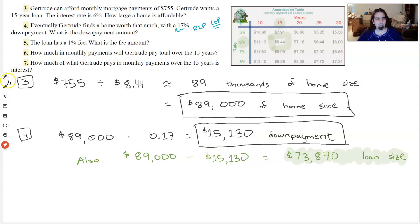The loan has a 1% fee. What's the fee amount? So we're asking what is 1% of this? Again, to get out of percent, we'll go left twice. So we'll get 0.01 for 1%.